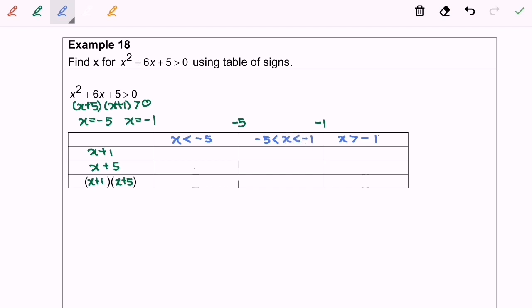Next, I'm going to substitute test values into x + 1. For example, I'll choose -6. If I substitute into the expression, I get -5, which is a negative value.